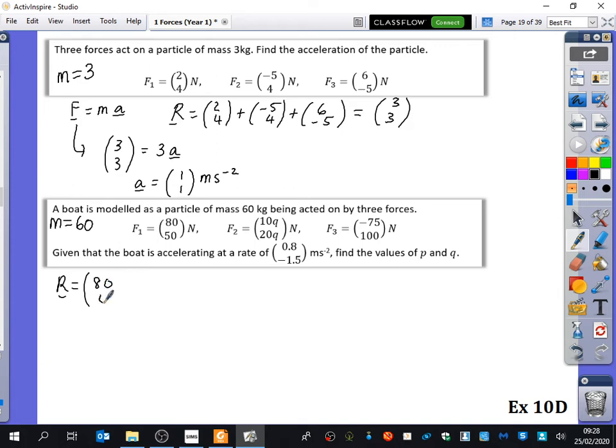So first of all, the resultant force is (80, 50) plus (10P, 20Q) plus, I don't know why it shouldn't say 10P and 20Q here, I've just realized, because it's asking us about P and Q. So let's change this top one, should be 10P. Otherwise, that question doesn't make much sense. So we're just going to do it like that instead. So it should be 10P on the top and 20Q on the bottom.